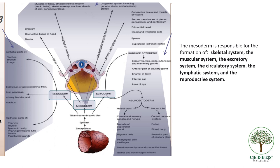The intermediate mesoderm gives rise to the urogenital system, which includes the gonads, the ducts and the accessory glands. The paraaxial mesoderm gives rise to muscles of the head, the skeletal muscles of the trunk and limbs, the dermis, and connective tissue. The lateral mesoderm gives rise to connective tissue and muscles of the viscera, the heart, blood and lymphatic cells, the spleen and the suprarenal cortex.